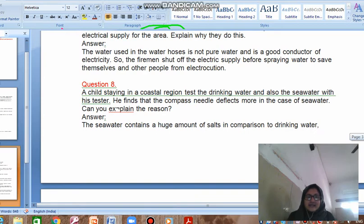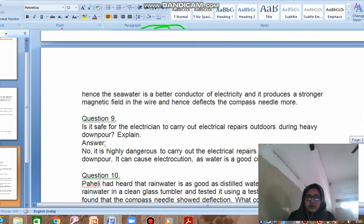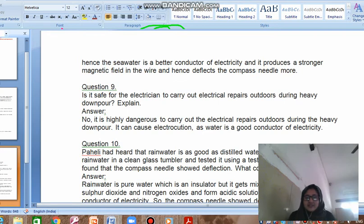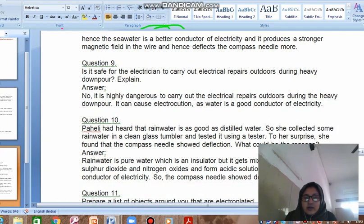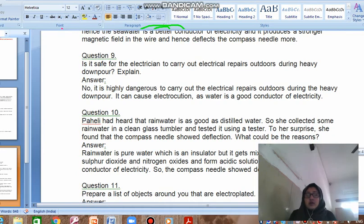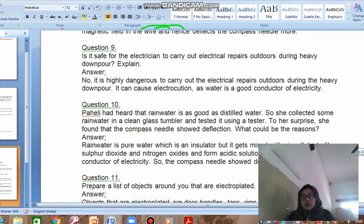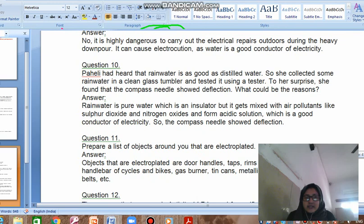Question number 8: A child staying in a coastal region tests the drinking water and also the sea water with his tester. He finds that the compass needle deflects more in case of sea water. Why? Because sea water is more saline - it contains more amount of salt than the normal tap water. That is why it is more conducting and therefore shows more deflection in the needle. Now, is it safe for an electrician to carry out electric repairs during heavy downpour? No, of course not, because the rain water is also a good conductor and therefore it may conduct electricity and the process of electrocution may also take place. Question number 10: Paheli had heard that rain water is as good as distilled water, so she collected it.